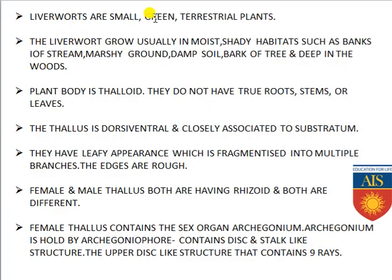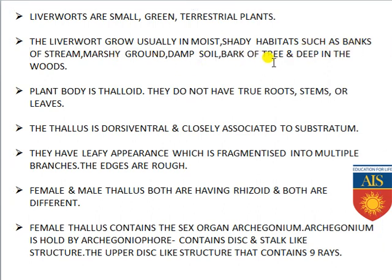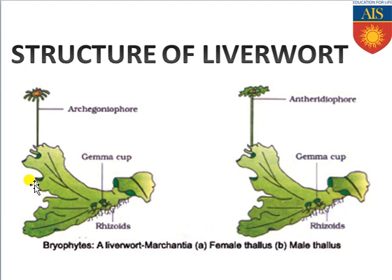Liverworts are small green terrestrial plant species commonly found in moist shady habitats such as banks of streams, marshy ground, damp soil, bark of trees, and deep in woods. The plant body is mostly thalloid — it does not have any root, stem, or leaf structure because the body is not differentiated. The thallus is dorsiventral and closely associated to the substratum, being dorsoventrally flattened.